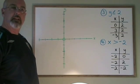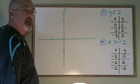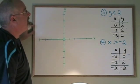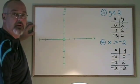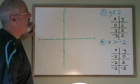Here are a couple more examples that involve a horizontal line and a vertical line. In example 3, y is less than or equal to 2. And I have prepared my table of values.